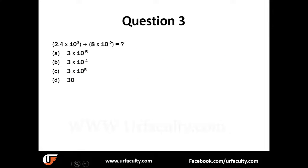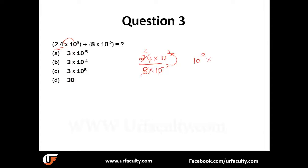Moving on: 2.4 × 10³ divided by 8 × 10 to the power of minus 2. The first step is to remove the decimal to avoid confusion, so we write it as 24 × 10² divided by 8 × 10 to the power of minus 2. Simplifying 24 divided by 8 gives 3. For the powers: 10² divided by 10 to the minus 2 equals 10 to the power of 2 minus (minus 2) = 10 to the power of 4. So the answer is 3 × 10 to the power of 4.